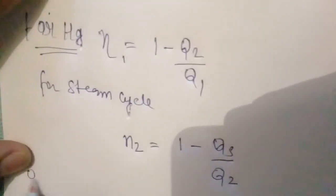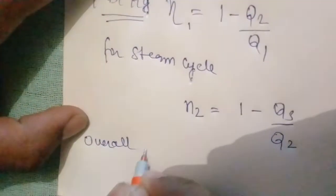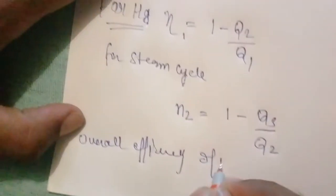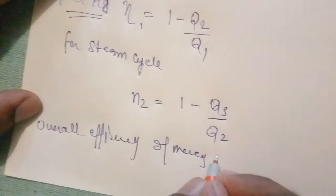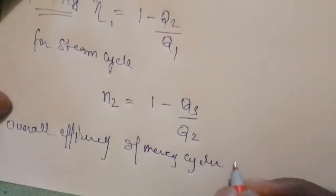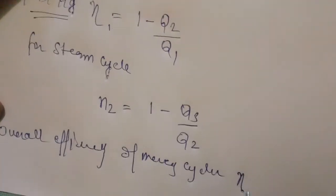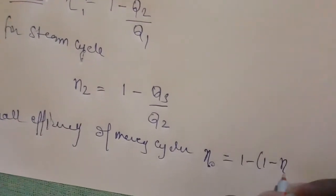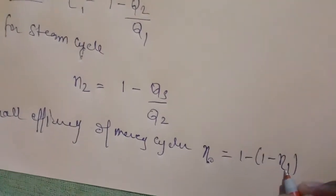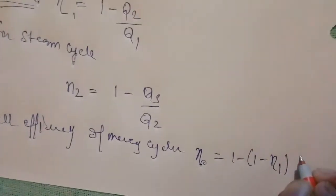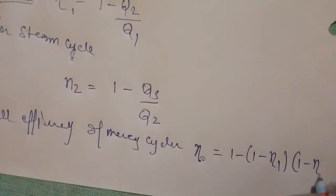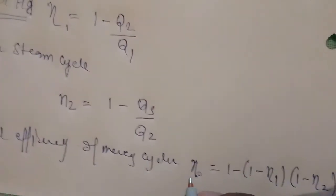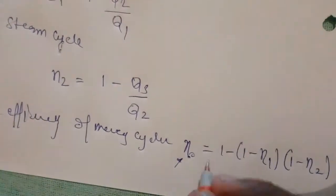The overall efficiency N0 is equal to 1 minus (1 minus N_Hg) multiplied by (1 minus N_steam), where N_Hg is the efficiency of the mercury cycle and N_steam is the efficiency of the steam cycle. This is the overall efficiency of the binary vapor cycle.